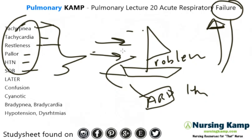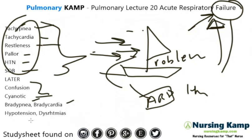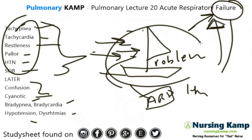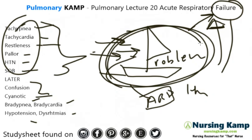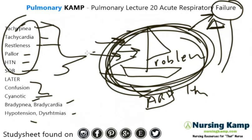When the problem is truly here and the patient is starting to fail, they start to show other signs and symptoms: confusion, cyanosis, bradypnea, bradycardia, hypotension, and dysrhythmias. That's all the failure starting to happen. But how do we truly know what acute respiratory failure is?